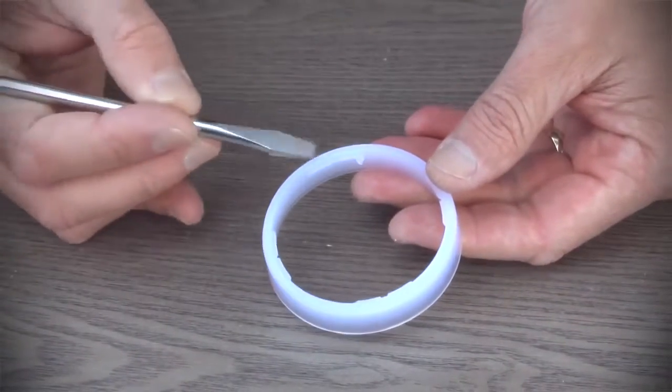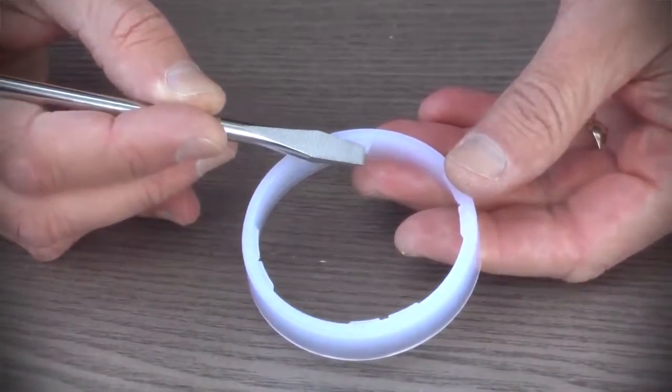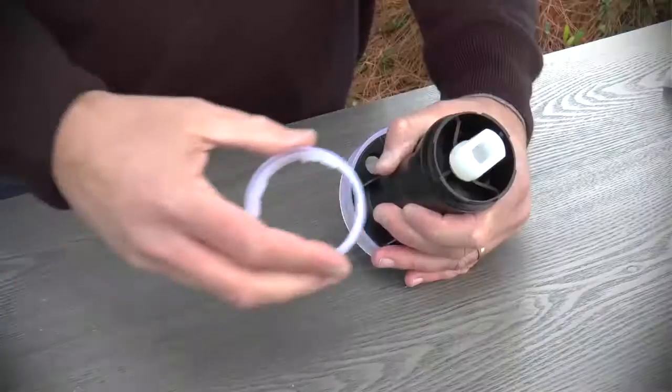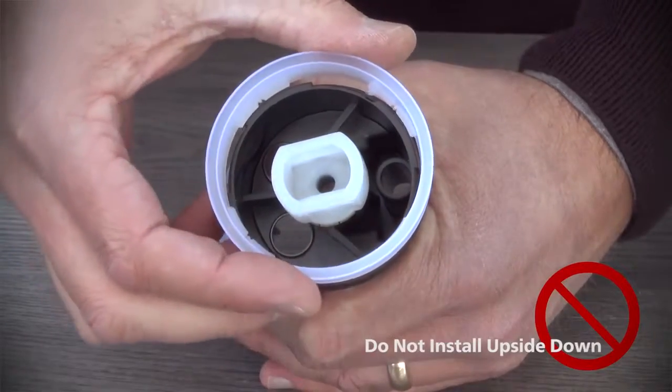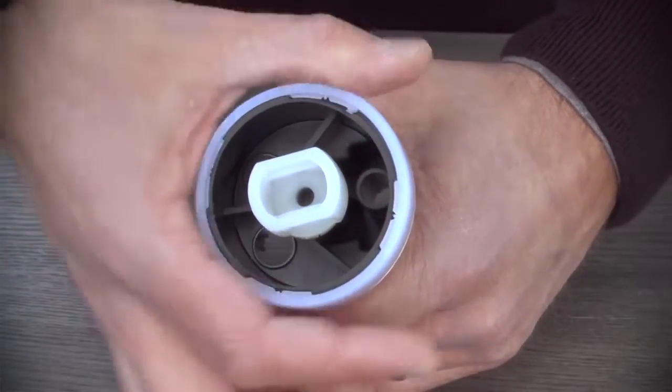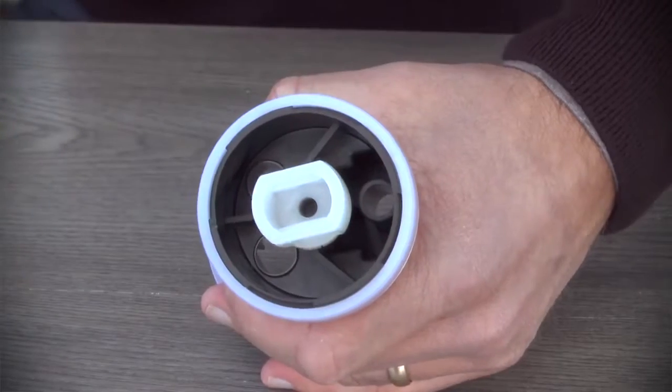The lower flange works the same way. Locate the tooth and notch, being careful not to install upside down like this. Then align and press it into the shell. Twist a quarter turn clockwise to lock.